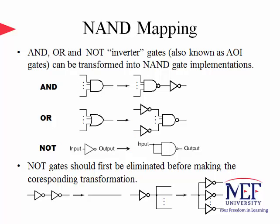First, we explain NAND gate mapping. AND, OR, and NOT inverter gates, also known as AOI gates, can be transformed into NAND gate implementations. AND-to-NAND conversion is pretty straightforward, as it only consists of adding one more NOT gate in front of a NAND gate to make up an AND gate. OR-to-NAND conversion is a bit more involved, but using De Morgan's law, life is much easier — I leave it as an exercise to show how they relate. NOT-to-NAND conversion is straightforward also, if you observe the Boolean axiom that A AND A equals A itself. A tip to keep in mind: NOT gates should first be eliminated before making the corresponding gate transformations.